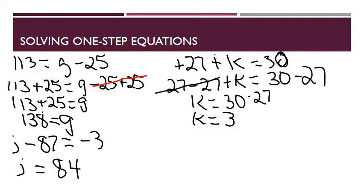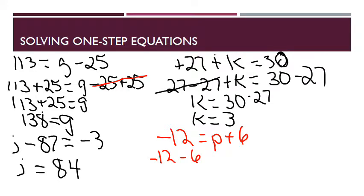Let's look at one more — in a different color: negative 12 equals p plus 6. I have a positive 6 with the variable p; to isolate p I subtract 6 from both sides. That gives me negative 12 minus 6 equals p. Negative 12 minus 6 is negative 18, so negative 18 equals p. That wraps up solving one-step equations with addition and subtraction.